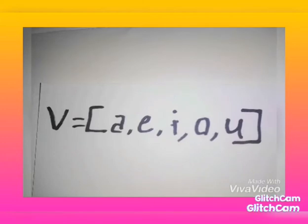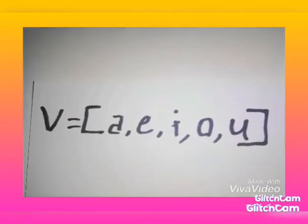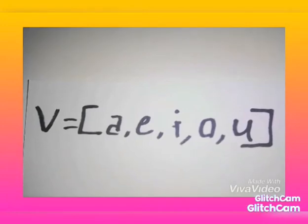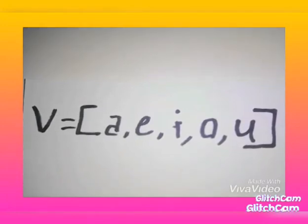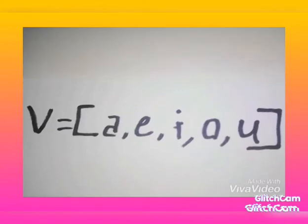Let's say set V equals the vowels in the English alphabet, which are A, E, I, O, and U. Now, A, E, I, O, and U are elements of set V, and can be written as: A is an element of set V, E is an element of set V, I is an element of set V, O is an element of set V, and U is an element of set V.